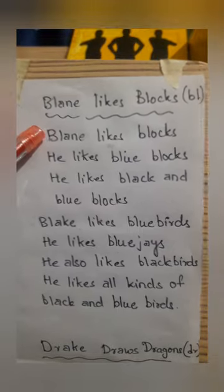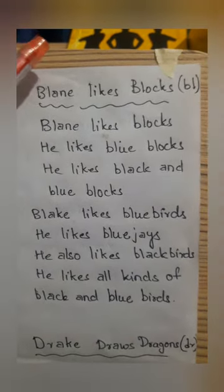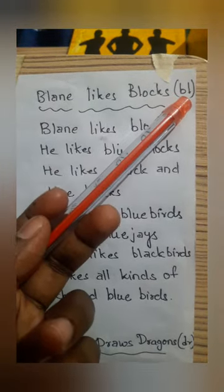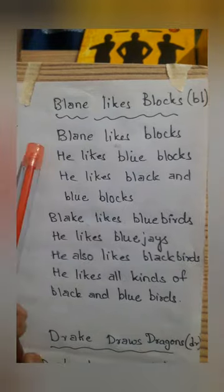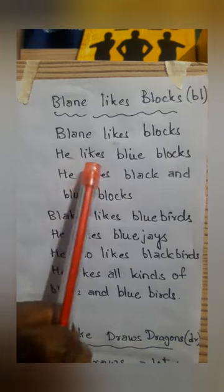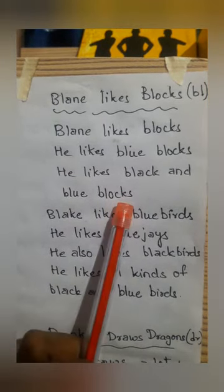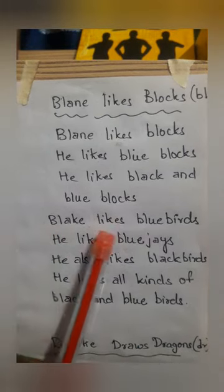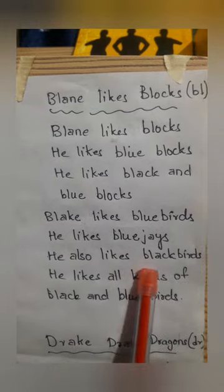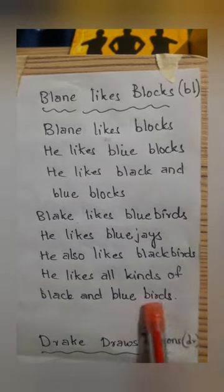And the fourth story for you is Blaine likes blocks. This story will help you in practicing the sounds of B and L together. Blaine likes blocks. He likes blue blocks. He likes black and blue blocks. Blake likes blue birds. He likes blue jays. He also likes black birds. He likes all kinds of black and blue birds.